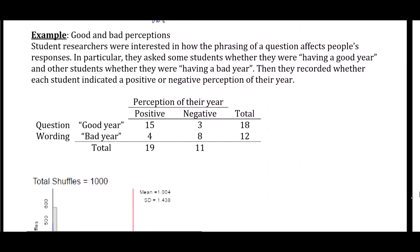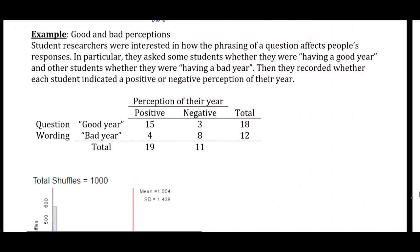This example is based on good and bad perceptions, and these data are available on ELC. Student researchers were interested in how the phrasing of a question affects people's responses. They asked some students whether they were having a good year, and other students whether they were having a bad year. The phrasing is either positively worded — 'are you having a good year?' — or negatively worded — 'are you having a bad year?'